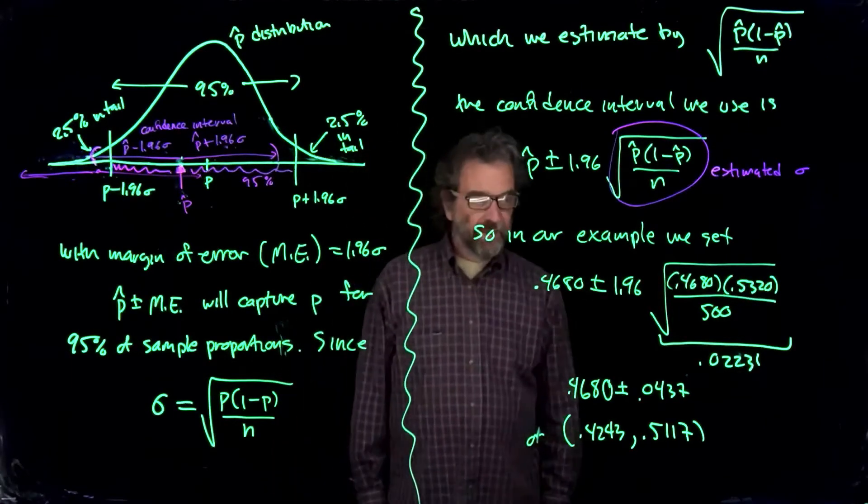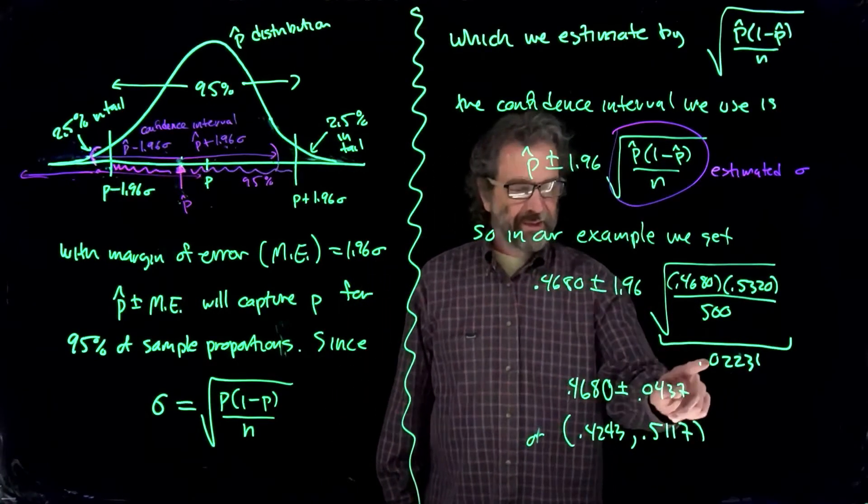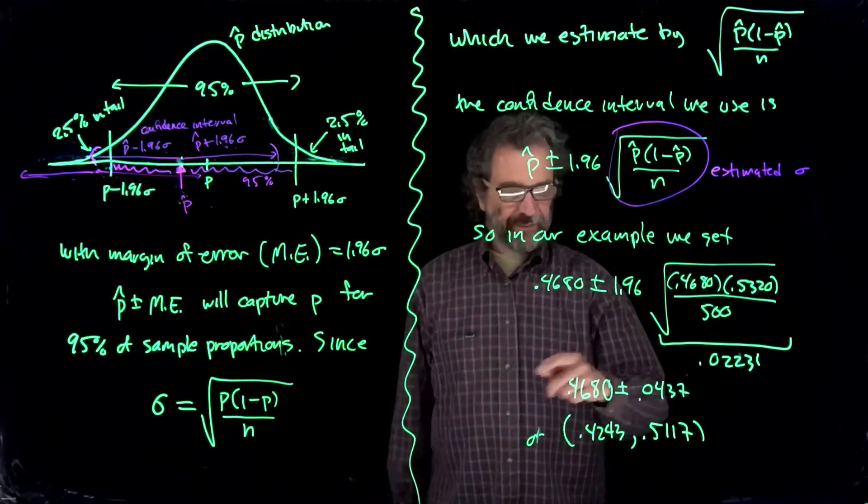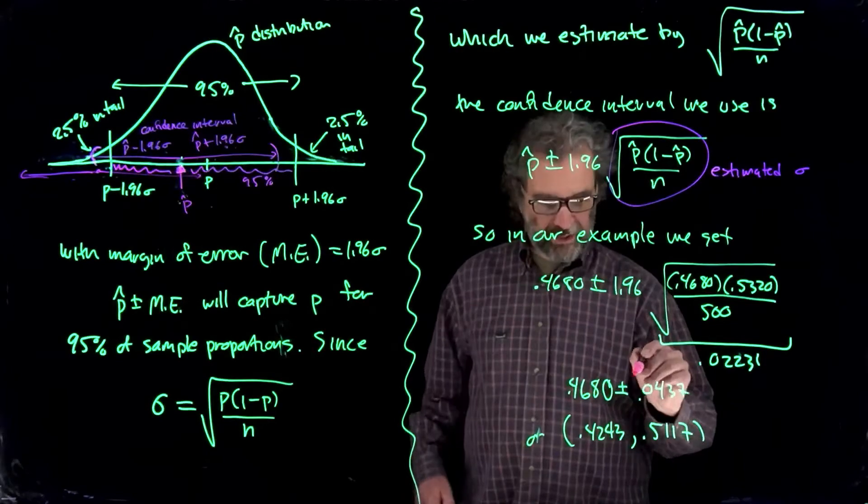Okay, so I wouldn't have predicted that. I know 2 would give 0.044. I didn't think it would make, well, not that big a difference, I guess. So we get a margin of error, right here, of 0.0437.